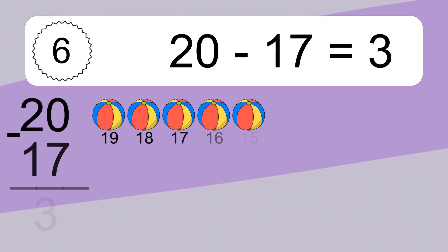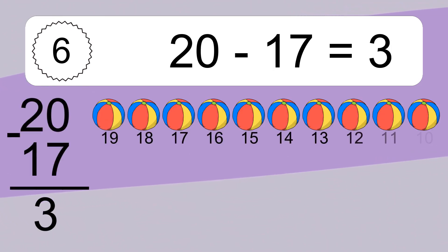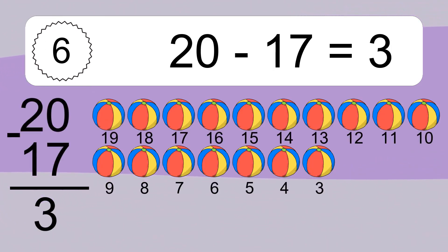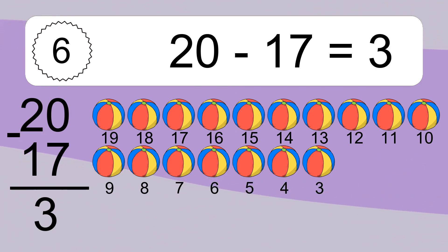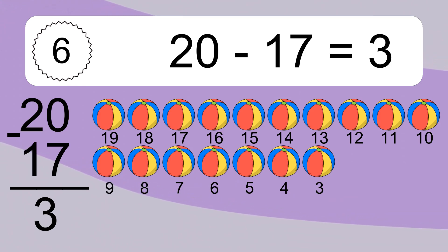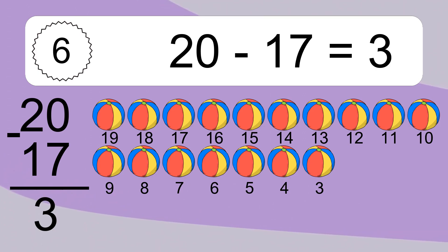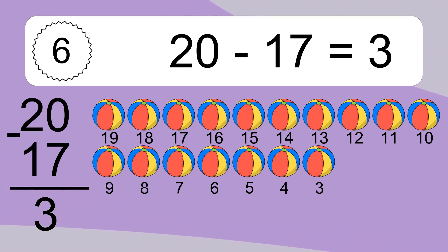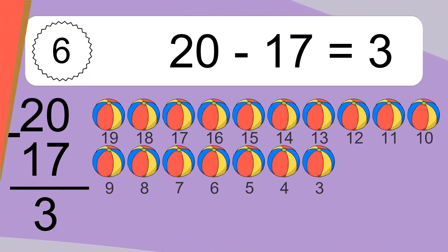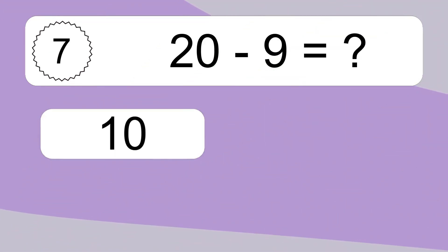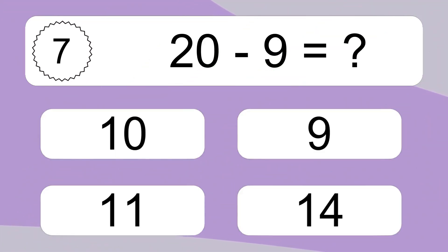20 minus 17 equals 3. Let's count it. 19, 18, 17, 16, 15, 14, 13, 12, 11, 10, 9, 8, 7, 6, 5, 4, 3. 20 minus 9 equals what?